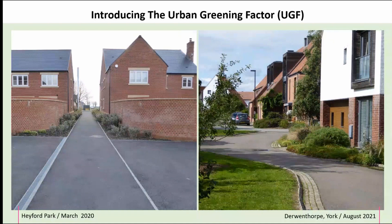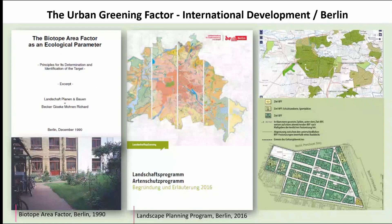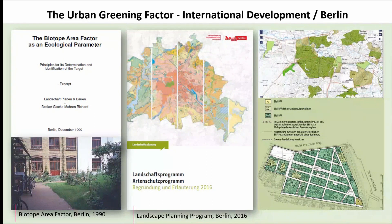The evolution of urban greening tools starts with a biotope area factor developed in Berlin — a dense urban city constrained politically in the last century. They had to maximise greening within the urban core, and the tool was part of a landscape planning programme but also a means to focus and prioritise greening where it was needed most in those dense urban mid-to-high-rise apartment block developments.